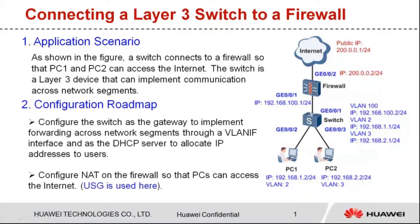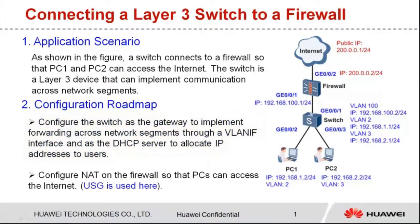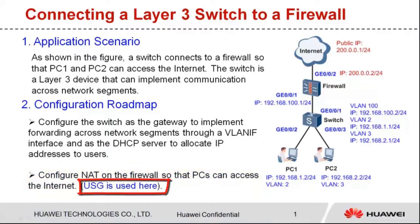The configuration roadmap is as follows. First, configure the switch as the gateway to implement forwarding across network segments through a VLAN-IF interface, and as the DHCP server to allocate IP addresses to users. Second, configure NAT on the firewall so that PCs can access the internet. The USG is used as an example; configurations of other firewalls are similar.